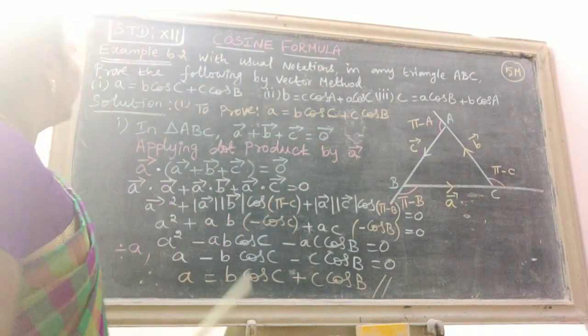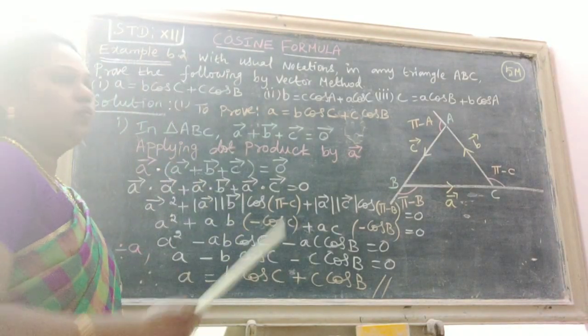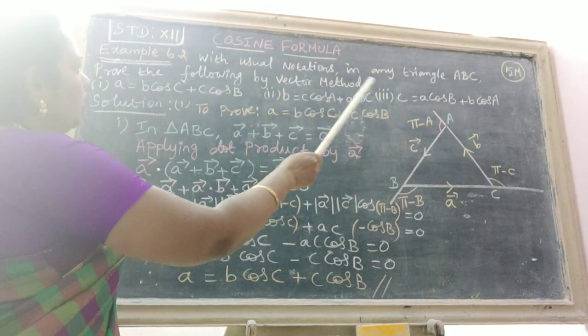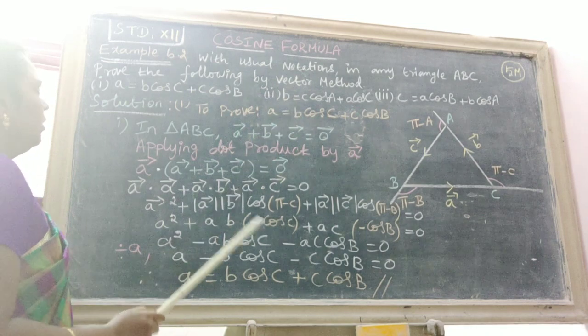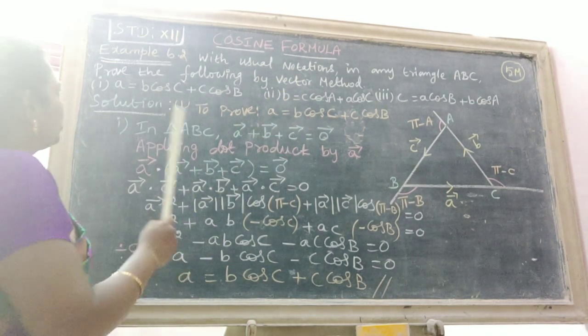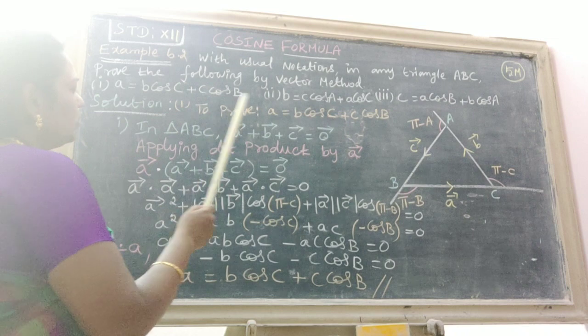Next problem is Example 6.2. With the usual notations in any triangle ABC, prove the following by vector method. There are three formulas. First: A equals B cos C plus C cos B.